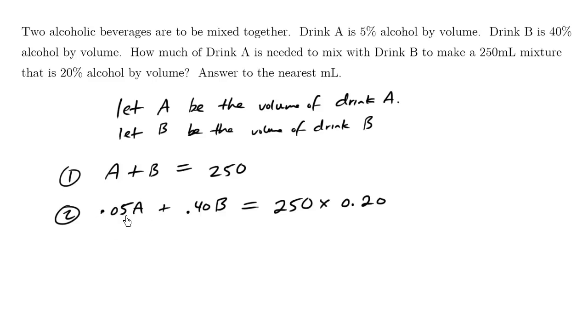I'm going to just multiply equation number 2 by 100. By the way, 250 times 0.20 using our calculator is equal to 50. So I'm going to multiply equation number 2 by 100, times 100 to get rid of the decimals here. We get 5A plus 40B equals 5,000 with two extra zeros there, 5,000.